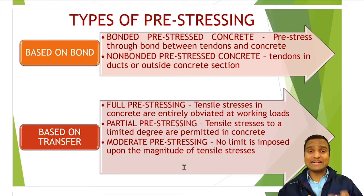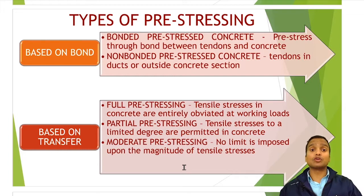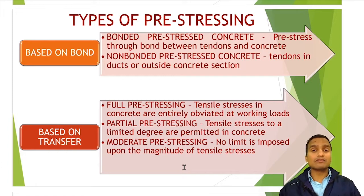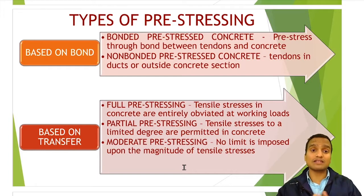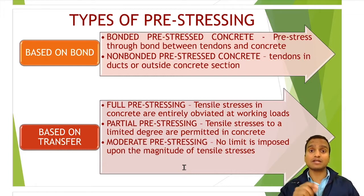If you want to make non-bonded PSC through pre-tensioning, a sheathing material or casing must be applied so that the tendon remains protected from corrosion. And if you want to make bonded PSC through post-tensioning — where ducts are already formed — you need to perform grouting, which means passing cement slurry through injections into those ducts.